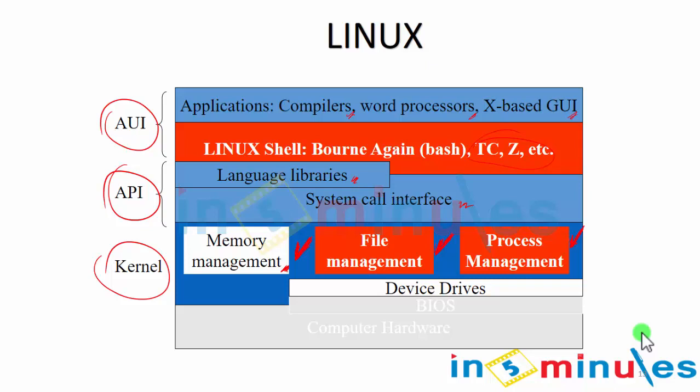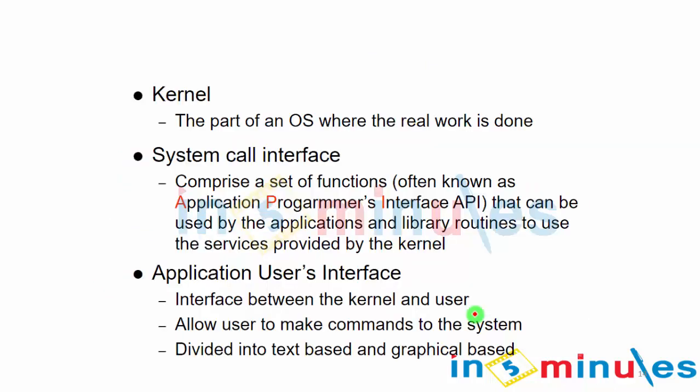The Linux kernel was created back in 1992 and enhanced over time. It is said that 12,000 programmers worked on it and 1,200 extra features were added. There is also the BIOS — Basic I/O System — and the computer hardware at the bottom. That's the Linux architecture overview.